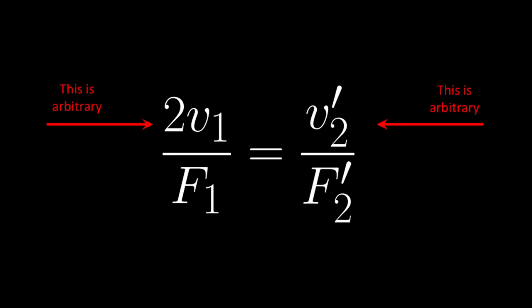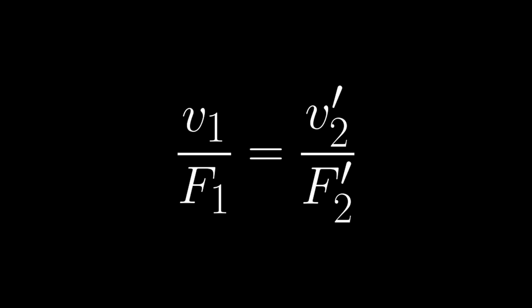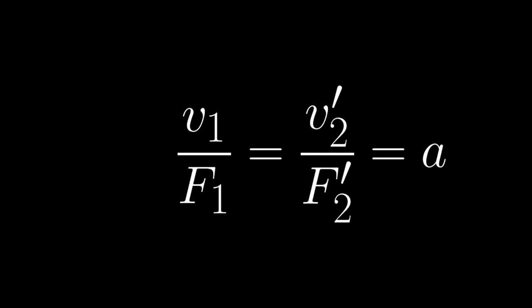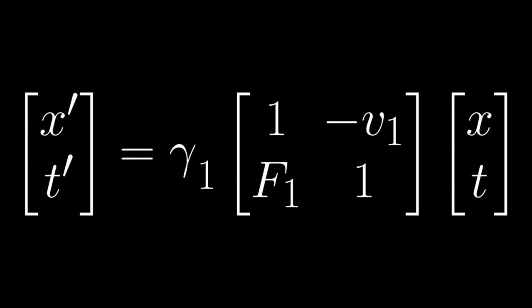The only way to reconcile this contradiction is for both ratios to evaluate to some universal constant that does not depend on either velocity. And since we have no idea what that constant is, I'm just going to assign it another random letter like, I don't know, A. We therefore have v1 over f1 is equal to v2 prime over f2 prime, which is equal to A. Remember, this relationship must be true for any arbitrary coordinate transformation. Therefore, our original transformation from Annie to Jim must likewise obey the same rule. That little constant f must therefore evaluate to v over A for all coordinate transformations. That leaves us with a new transformation, which looks like this.